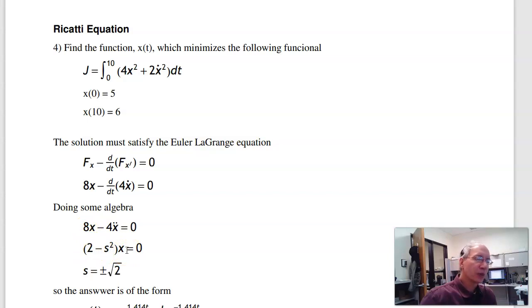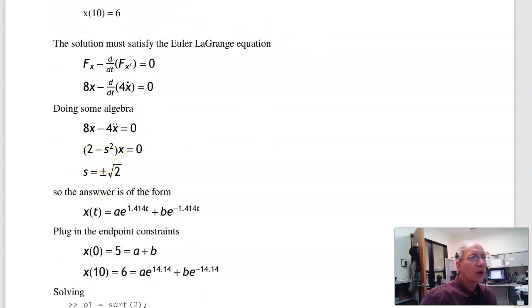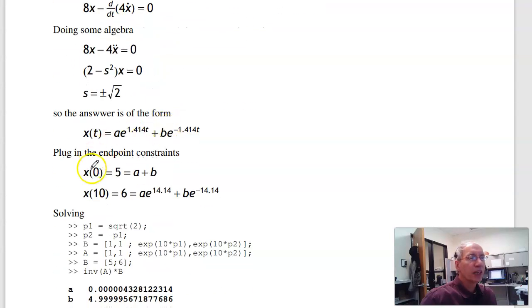Either x=0, which is the trivial solution, or s is ±√2. Going with the latter case, that tells me x is in this form: something e^(√2·t) plus something e^(-√2·t). Two unknowns, so I need two equations for two unknowns. To solve, plug in the two endpoints. At the left endpoint when t=0, x=5. When t=10, x=6. Gives me two equations, two unknowns. Solve.